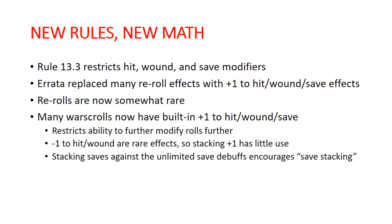Rule 13.3 restricts hit, wound, and save modifiers. The hit and wound modifiers are capped at plus one or minus one, and saves at plus one, with no restriction on the downside. That changes the hit and wound stacking that used to happen in some armies. It's now restricted, and there's not that much minus one to hit or wound floating around, but there's a lot of minus one to your save between effects and the prevalence of rend.